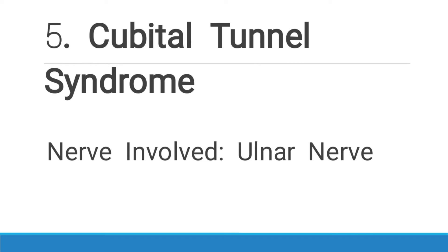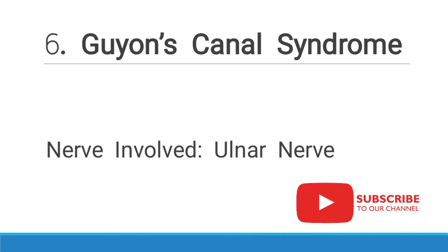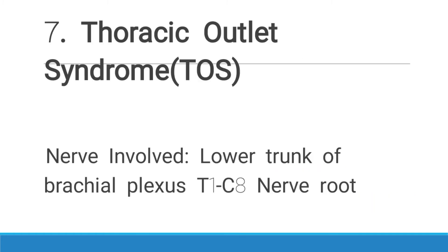Number five is cubital tunnel syndrome, and the nerve involved here is the ulnar nerve. At the cubital region of the upper limb, the nerve may be severed, undergo compression, or suffer some kind of trauma — any injury to the ulnar nerve at that region causes cubital tunnel syndrome. Number six is Guyon's canal syndrome, and the nerve involved here is also the ulnar nerve, occurring near the hook of hamate on the most medial part of the hand.